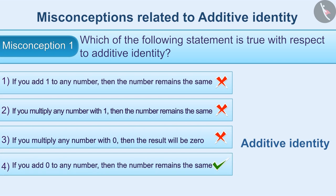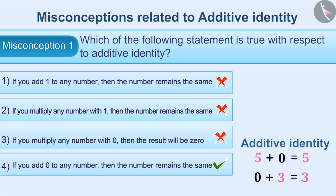Option 4 is the correct answer with respect to additive identity: if you add 0 to any number, then the number remains the same. Whether we add any number to 0, or 0 is added to that number, the result always remains the same. For example, 5 plus 0 equals 5, and 0 plus 3 equals 3.